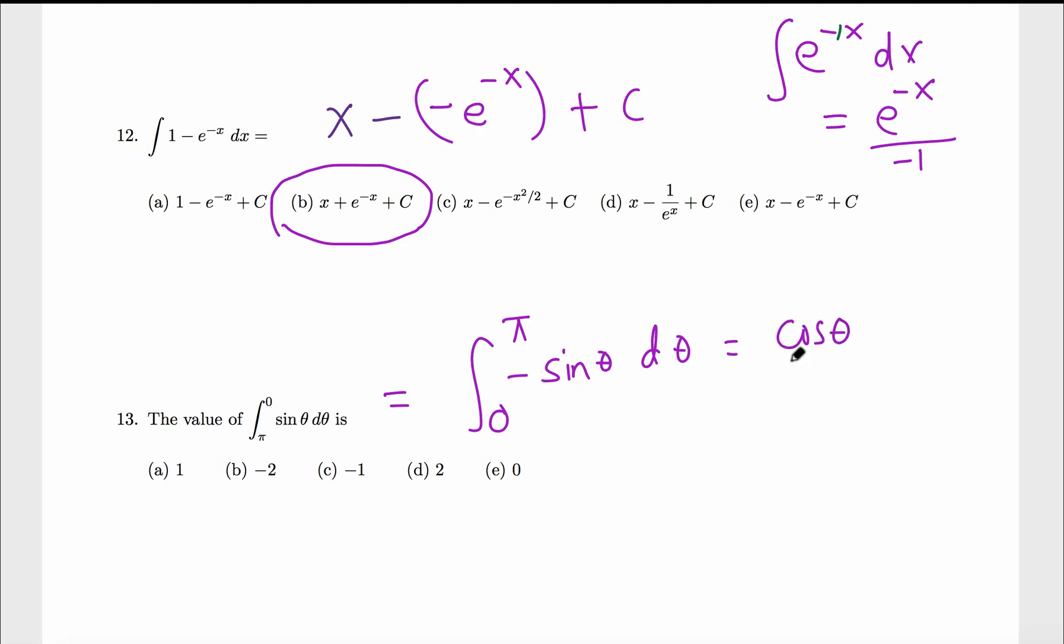Check one more time: derivative of cosine is negative sine. Now 0 to pi, so cosine pi, cosine 180, negative 1, minus that's coming from the fundamental theorem of calculus, cosine 0 is 1. So negative 1 minus 1, that's negative 2.